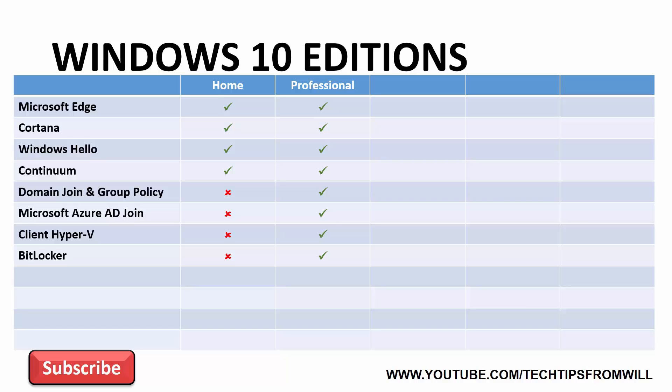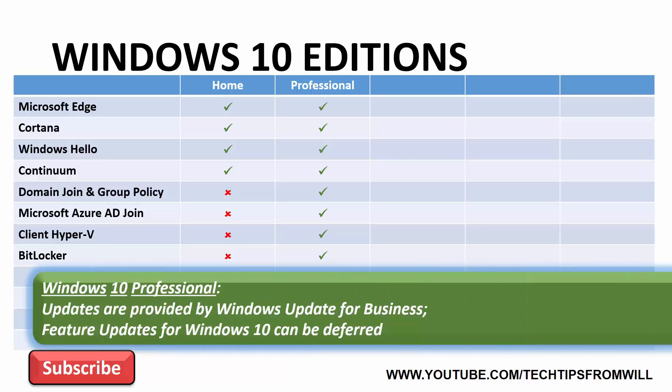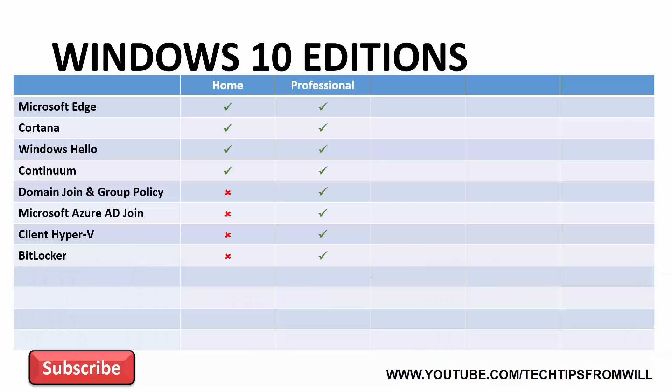That covers the features for Windows 10 Professional. However, you should know that Windows 10 Professional handles its updates differently to Windows 10 Home Edition. With Windows 10 Professional, updates are provided by Windows Update for Business, meaning the administrator has more control over how updates are applied. Windows 10 Professional adds the ability to defer feature updates, meaning that when Microsoft releases brand new features for Windows 10, these features will not be downloaded or installed for several months. This does not affect security updates, however. Security updates are always downloaded and installed automatically, and there's nothing that can be done to prevent this.